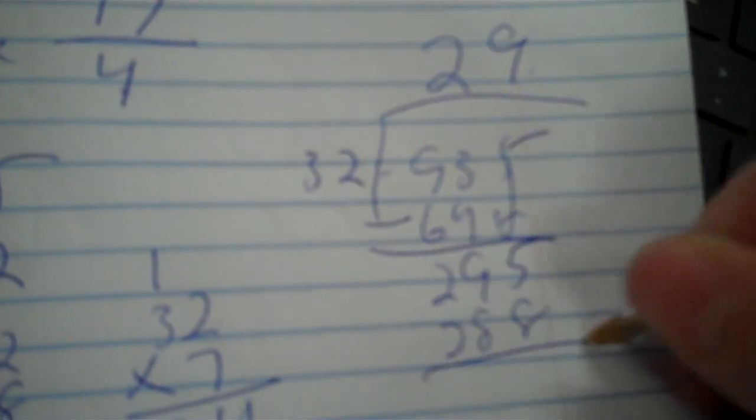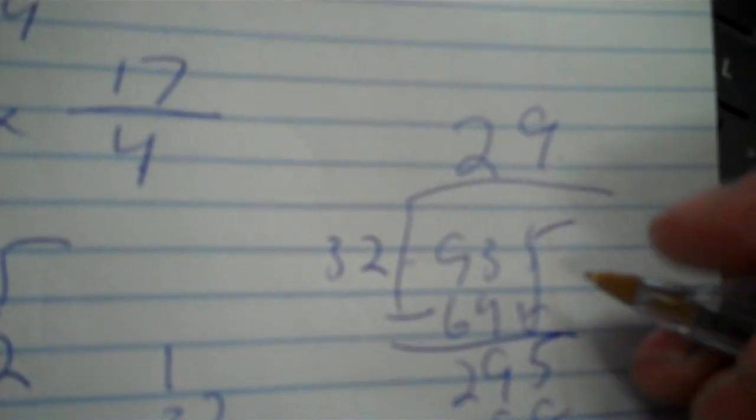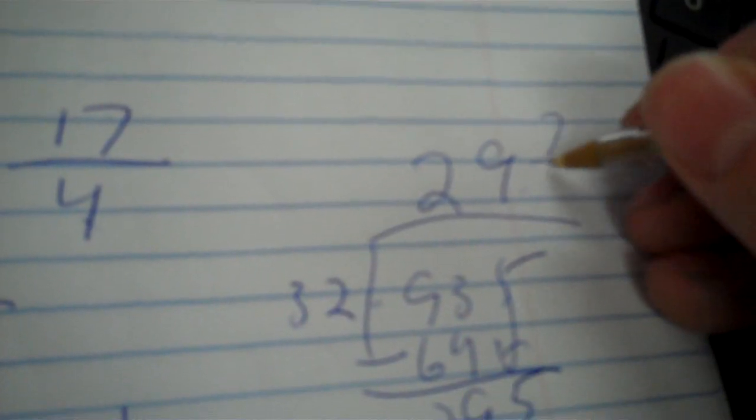You've still got to bring the 5 down. 32 into 295, I'd guess. Let's say 7. That's kind of high. How about 8? Kind of low. So, 6. I'm still kind of low. How about 9? It'll go in 9 times. 32 times 9 is 288. With 7 left over. So, remainder 7 over 32. So, 29 and 7 over 32.